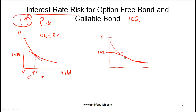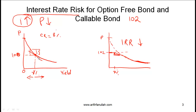Overall, the price-yield curve for a callable bond is shaped differently. Notice that the interest rate risk — the slope of the price-yield curve — for a callable bond is generally less than for a non-callable bond. For example, going from an interest rate of 7% to 8%, the change in price for the callable bond is very small compared to the more substantial change for a non-callable bond. So the interest rate risk for a callable bond is less than for an option-free bond.